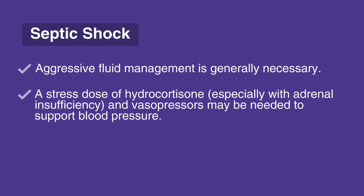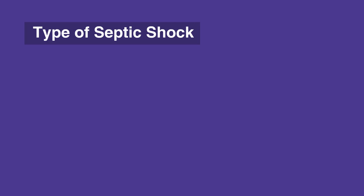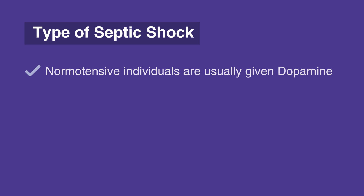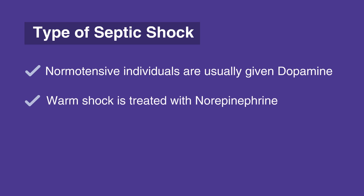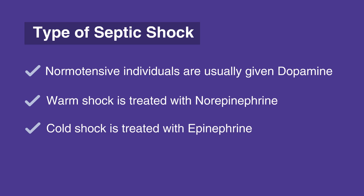After fluid resuscitation, vasopressors are given if needed and according to the type of septic shock. Normal, intensive individuals are usually given dopamine. Warm shock is treated with norepinephrine, and cold shock is treated with epinephrine. Transfusing packed red blood cells to bring hemoglobin above 10 grams per deciliter treats decreased oxygen-carrying capacity. As blood cultures return, focus antibiotic therapy to the particular microbe and its resistance patterns.